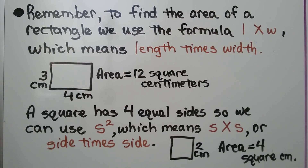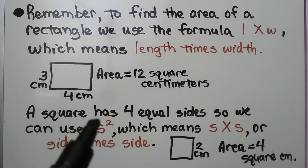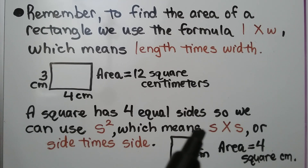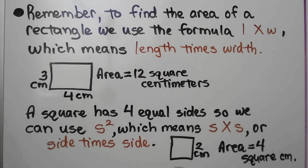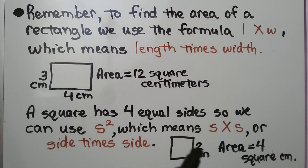A square has four equal sides, so we can use S squared — S to the second power — which means side times side. If the side is two centimeters, we multiply two times two. Every side is two, and two centimeters times two centimeters equals four square centimeters.